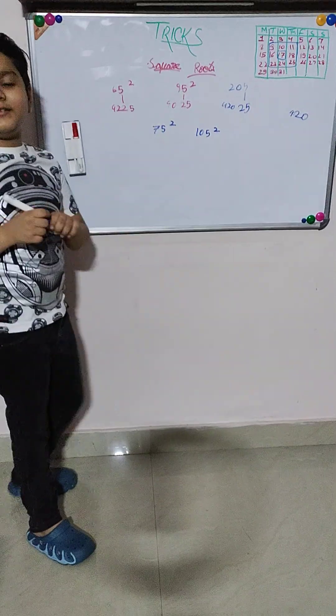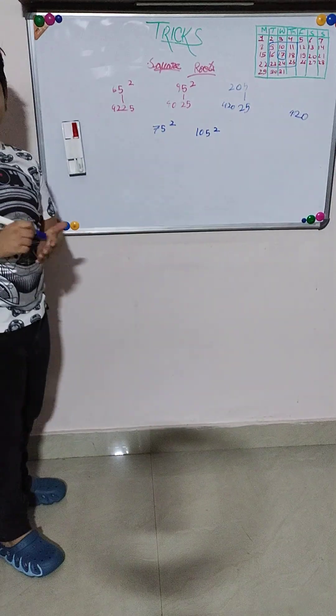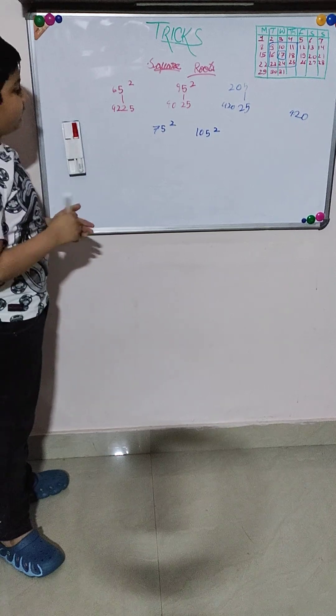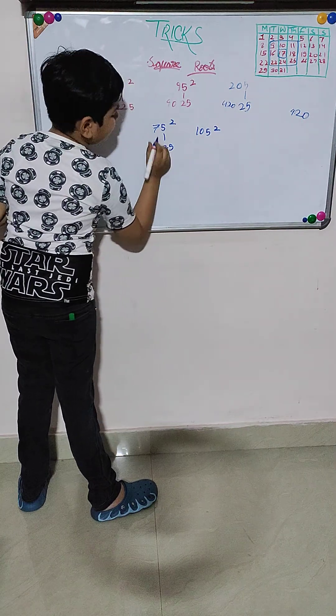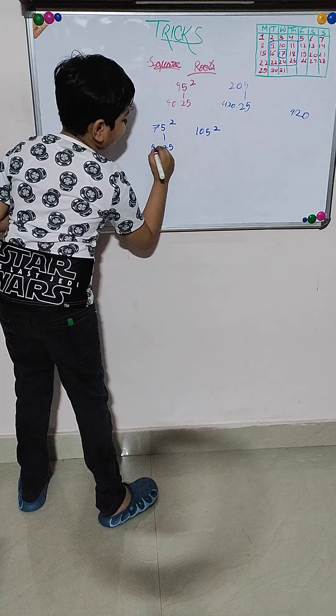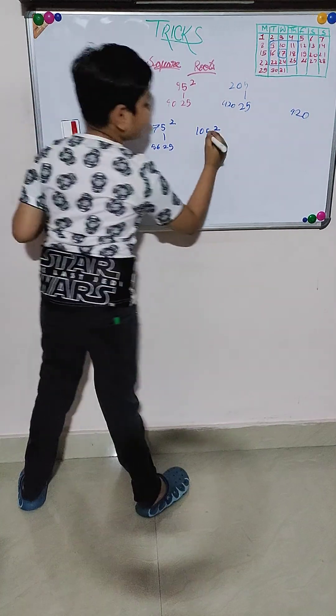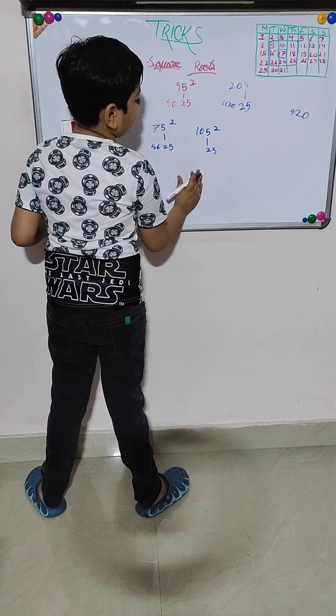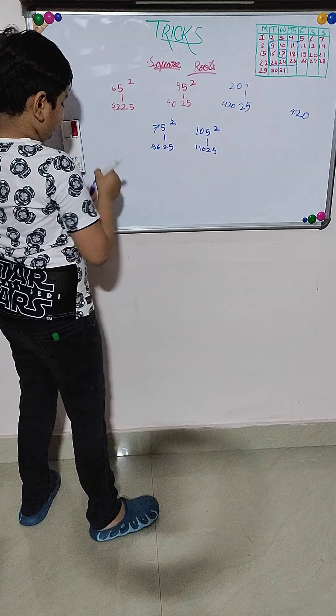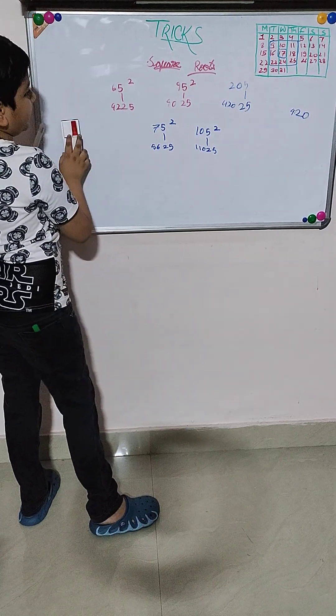Now I will tell you the answers in 10 seconds. Let's see. 75 squared: 5 is 25, 7 into 8 is 56. 105 squared: 5 is 25, 10 into 11 is 110.